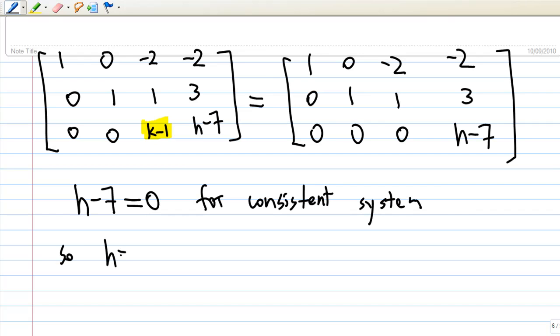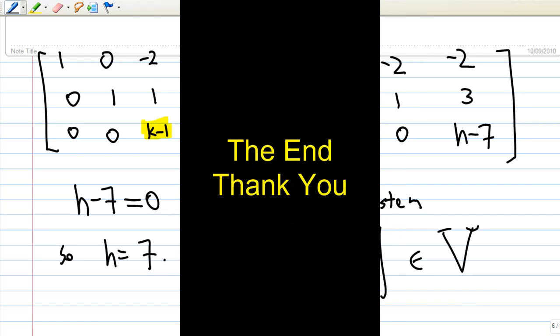Therefore, H equal to 7. That means the vector [4, 3, H], which is equal to [4, 3, 7] now, is in V. That is the end of the recording. Thank you.